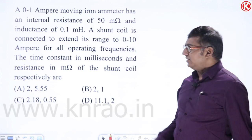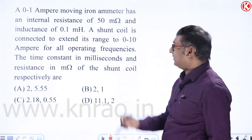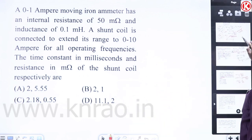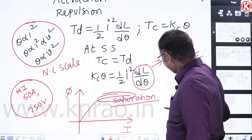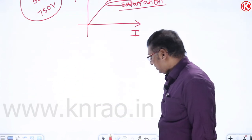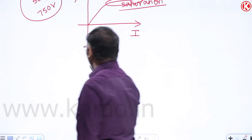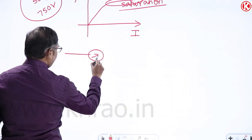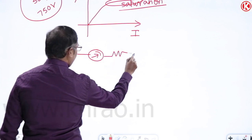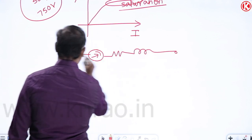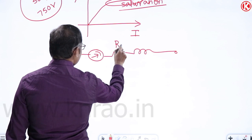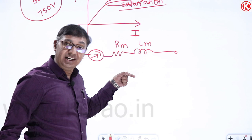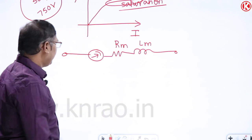Now let's look at range extension of MI instruments. An MI instrument can be represented as a resistance Rm and inductance Lm. To extend the range to measure higher currents, we need to consider the frequency problem.